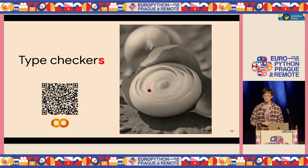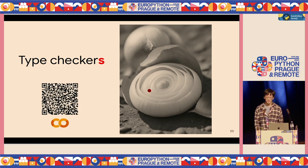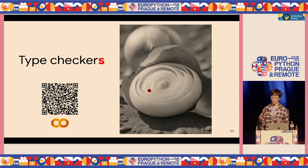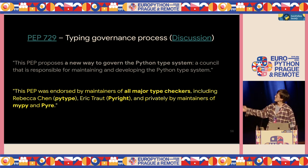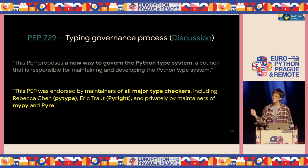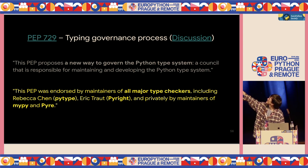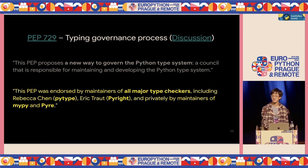Now let's talk about type checkers. Here's a Colab you can check later to easily compare type checkers. Remember in PEP 729, it says the PEP was endorsed by all major type checkers: PyType, PyRight, MyPy, and Pyright — four major type checkers mentioned.